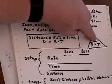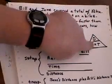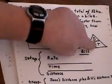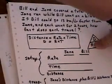So if I wanted to find D, it equals R times T. If I wanted to find R, it equals D divided by T. If I wanted to find T, it equals D divided by R.